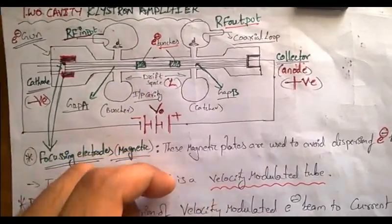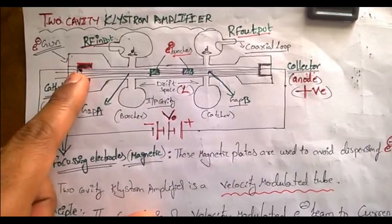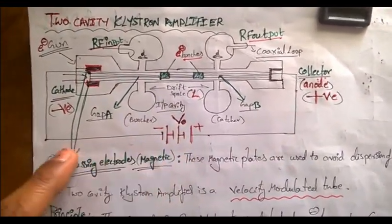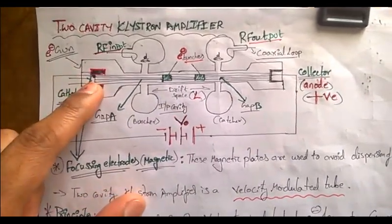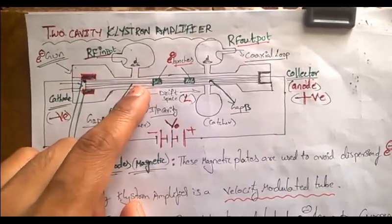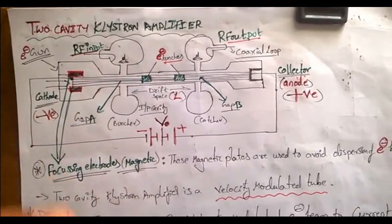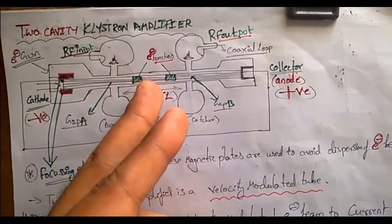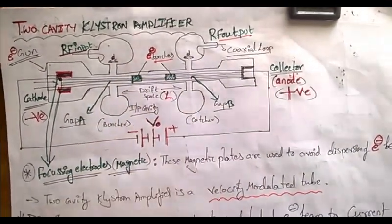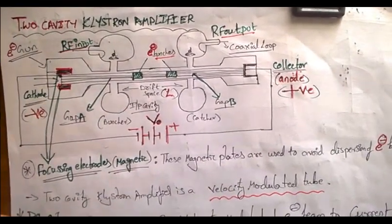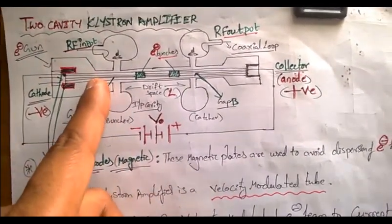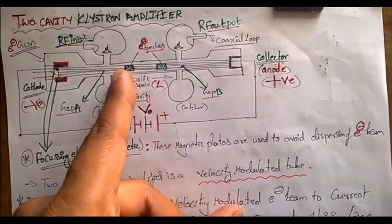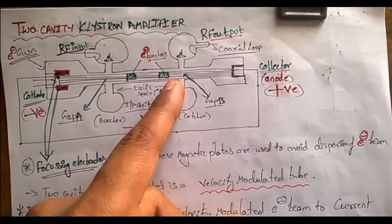The electron is traveling with its source-determined velocity. When the electron arrives at the buncher cavity, due to the induced voltage it gets a boost from the RF input. The induced voltage makes it travel as fast as possible — near the velocity of light — and the electron then travels through the drift space.